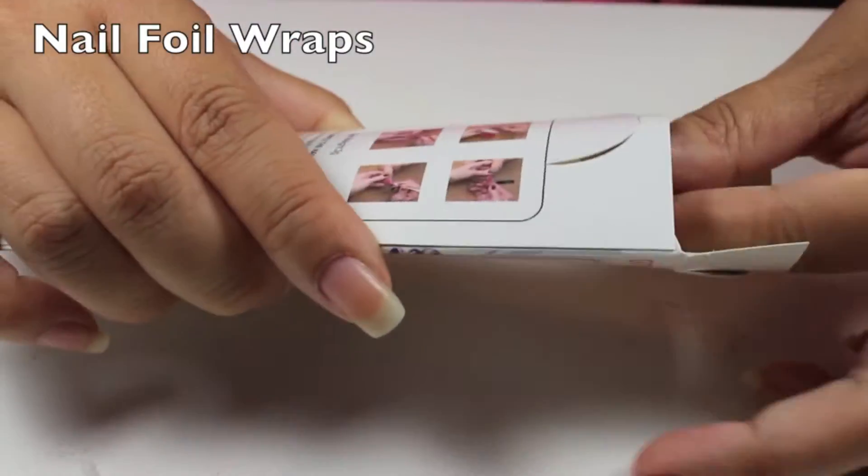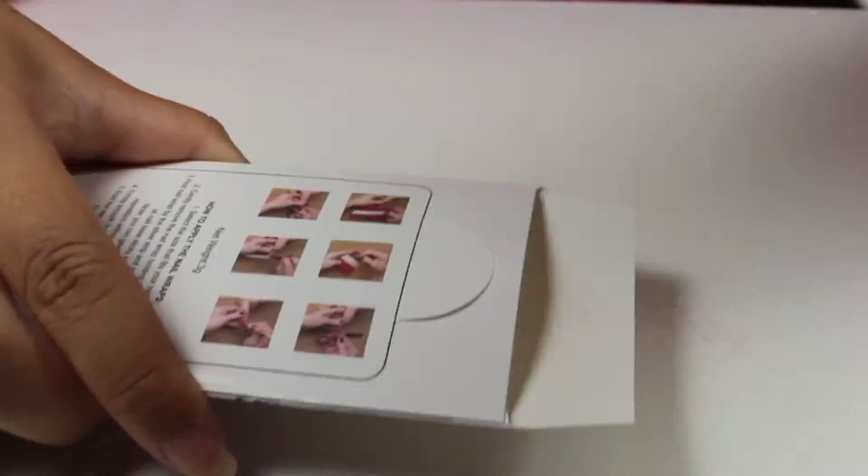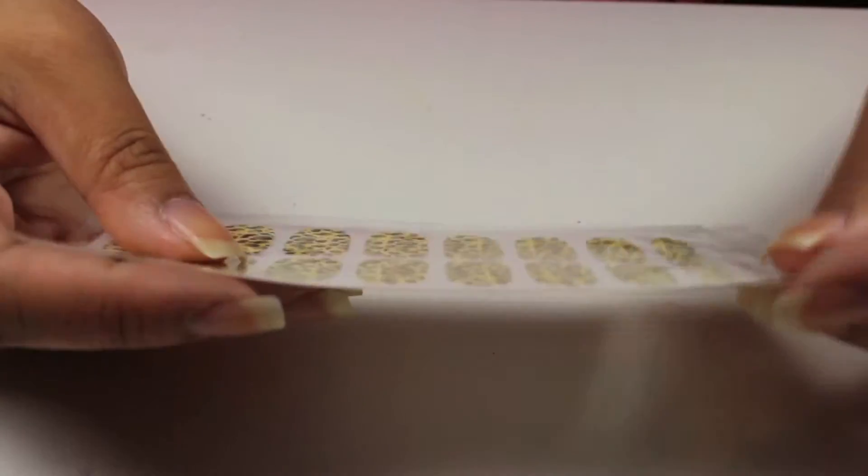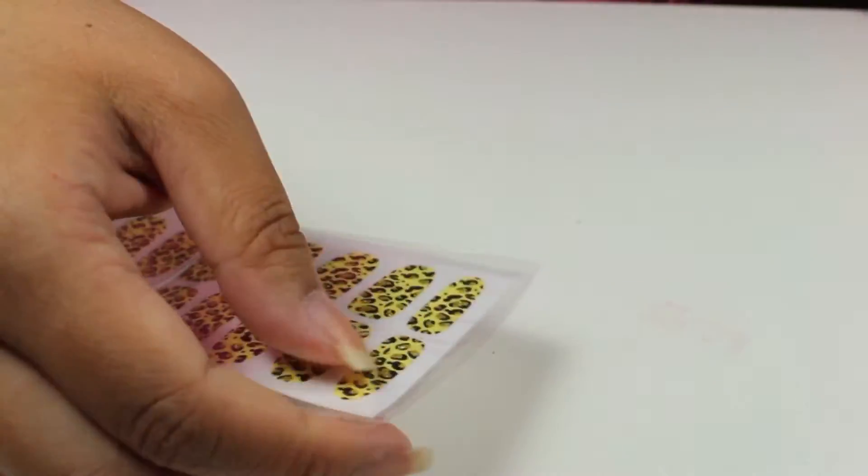First, my nails are clean. I'm going to be using the nail foils in cheetah print that I received, and there's a pictorial on how to create. First, you're going to have to rip open the packet.